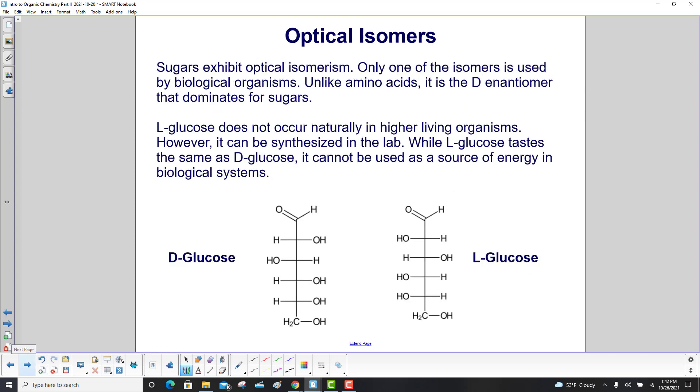Sugars exhibit optical isomerism. Only one of the isomers is used by biological organisms. Unlike amino acids, it is the D enantiomer that dominates for sugars.